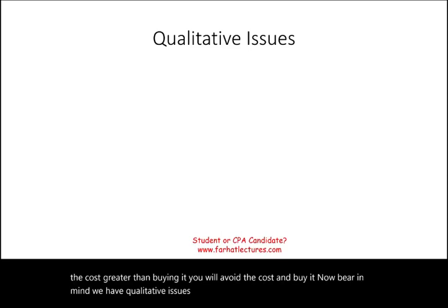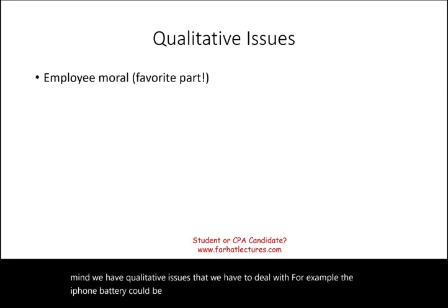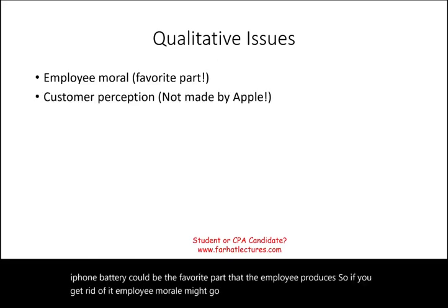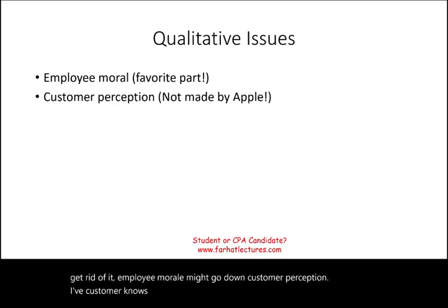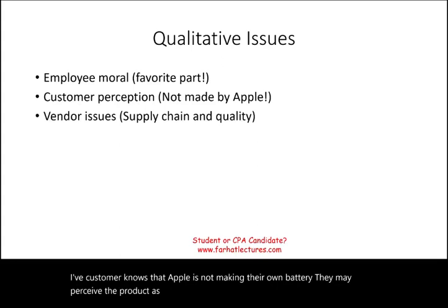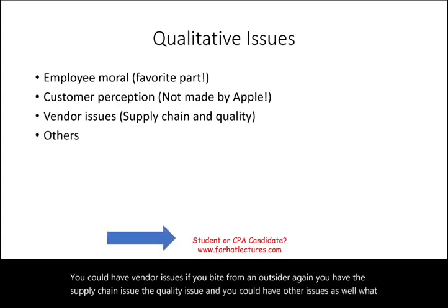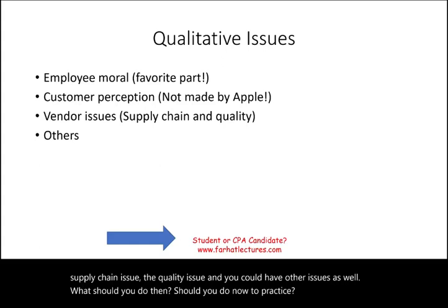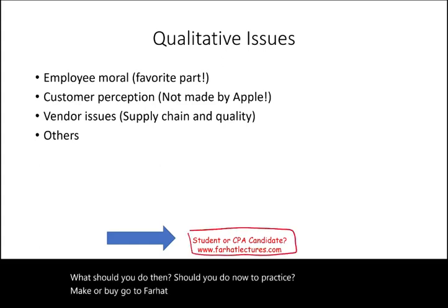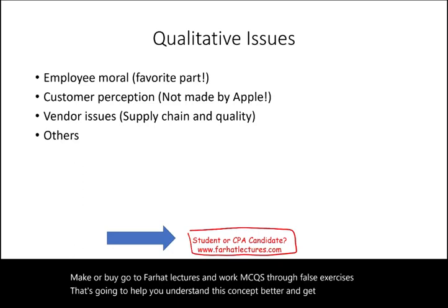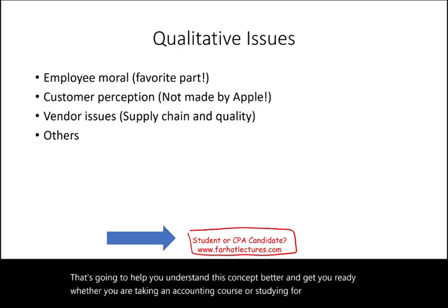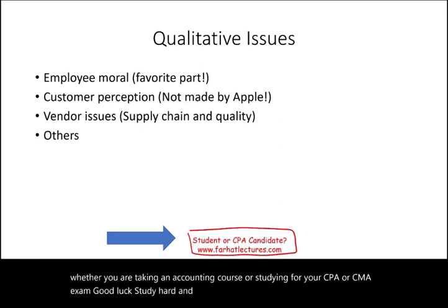There are also qualitative issues to consider. The battery production could be a task employees value, so eliminating it may hurt morale. Customer perception may suffer if customers know Apple doesn't make its own battery. There are also vendor issues — supply chain risk, quality concerns, and other problems when relying on an outside supplier. To practice make or buy decisions, work through MCQs and exercises to solidify the concept for accounting courses or the CPA/CMA exam. Good luck, study hard, and invest in your education.